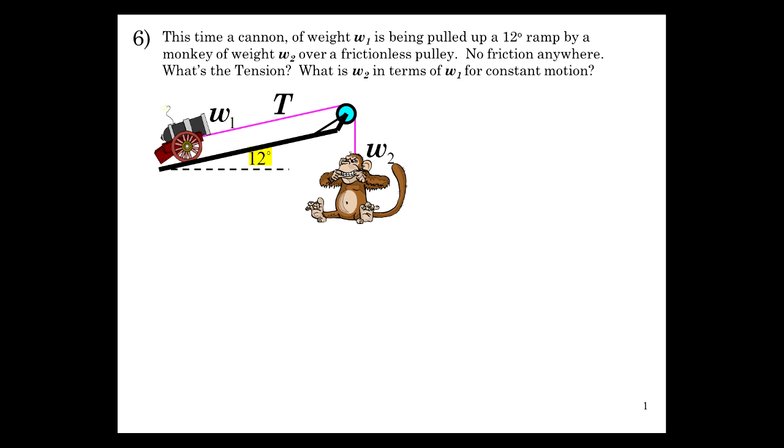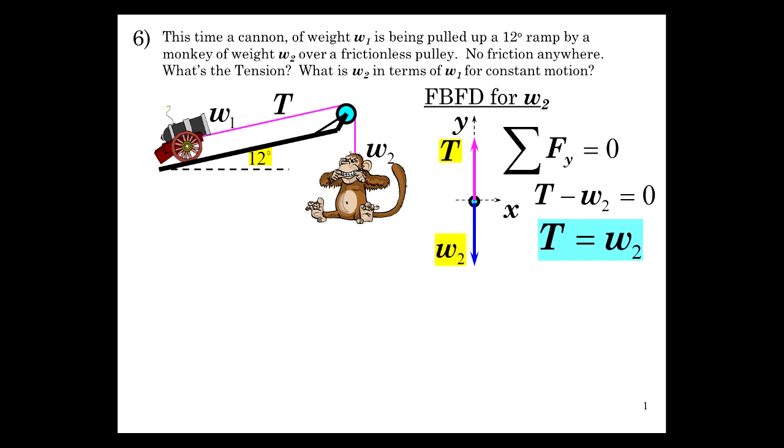So free body for the monkey. We have x and y coordinates. We have weight two, the monkey, with tension acting upward. It's moving at constant motion, which really makes this problem quite simple. Sum of the forces in the y is zero. T minus w2 equals zero, so the tension equals the weight. No acceleration, so the tension and the weight are the same.